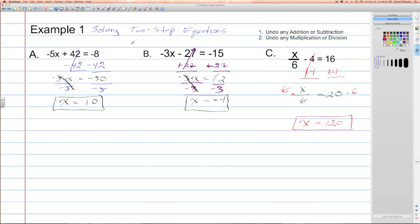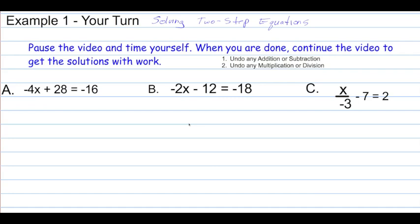So as you saw in every one of the examples, I undid any addition or subtraction first, then I undid any multiplication or division next. Example 1, your turn — solving two-step equations. Pause the video and give yourself 5 to 10 minutes to solve these three problems. When you're done, continue the video to get the solutions. Remember to use the two steps: undo any addition or subtraction, then undo any multiplication or division.